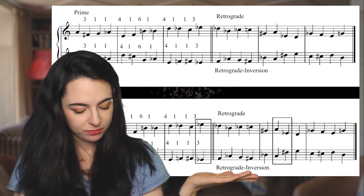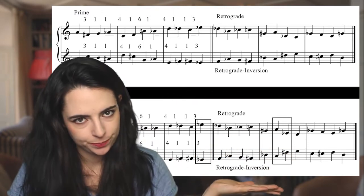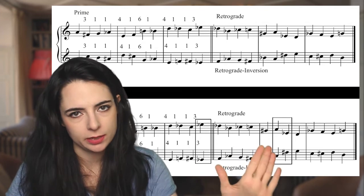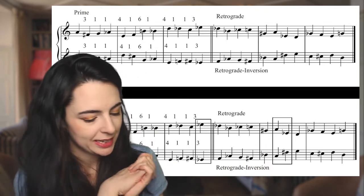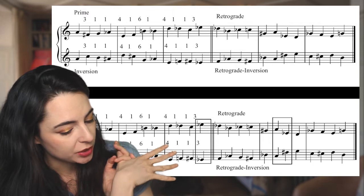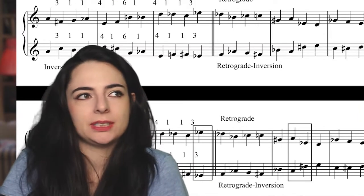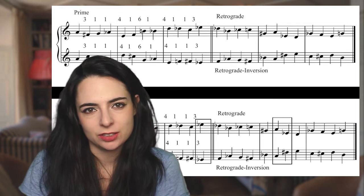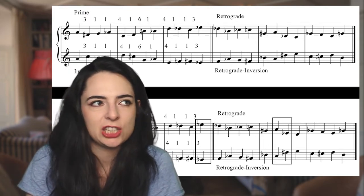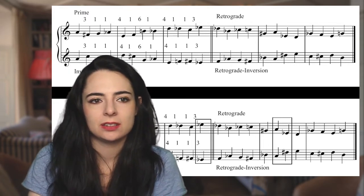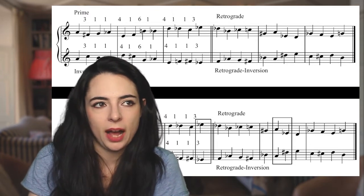By transposing the canonic imitations — changing the pitches while keeping the intervals — Webern has generated further patterns. For instance, the same pitches coincide with each other throughout the different versions. To put it simply, Webern is modifying his patterns to generate other patterns.